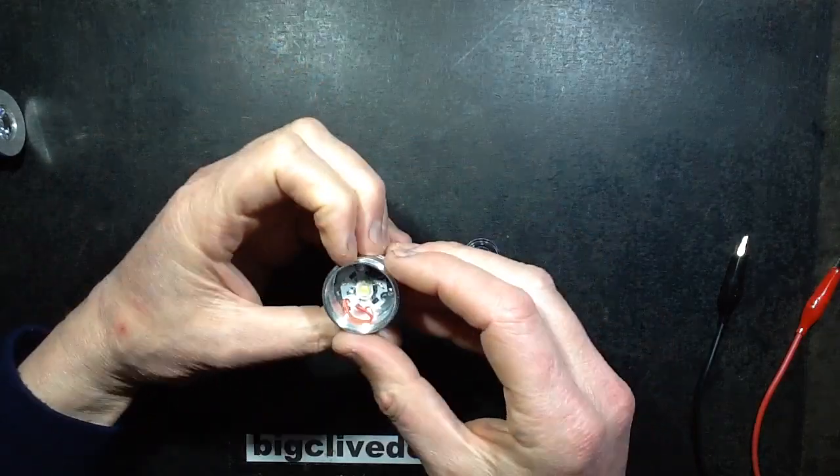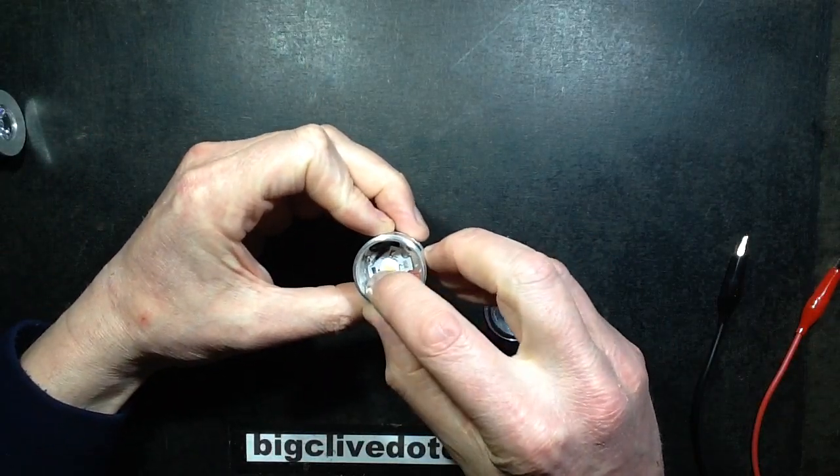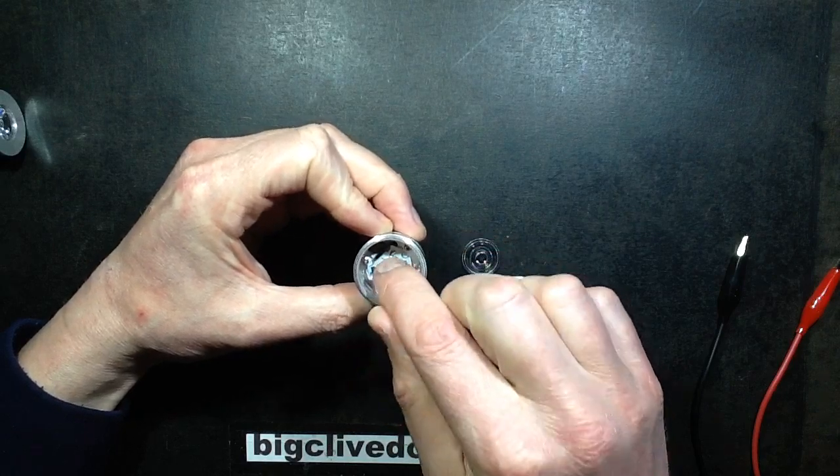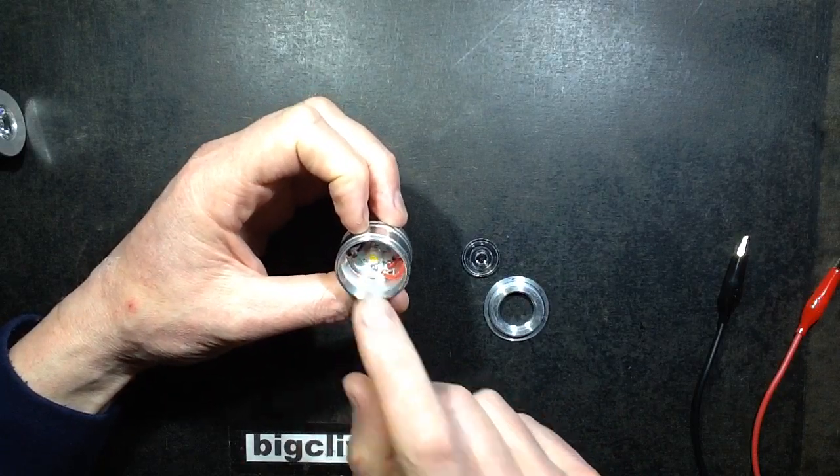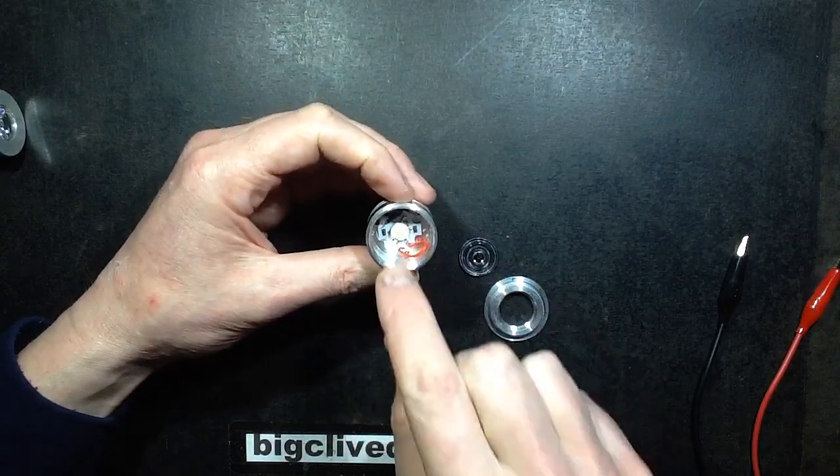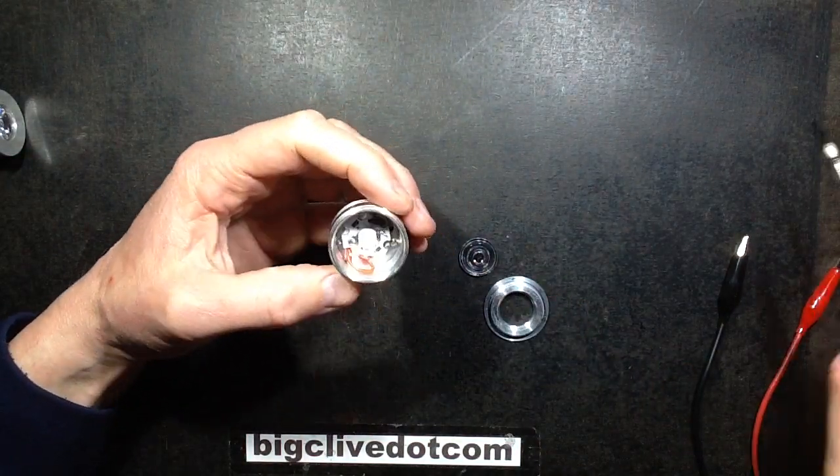Lens drops out. Is the LED glued in? No, it's just stuck in. It's just on heat sink compound. That would not be good, the fact it wasn't being pushed down hard by the front of the light.